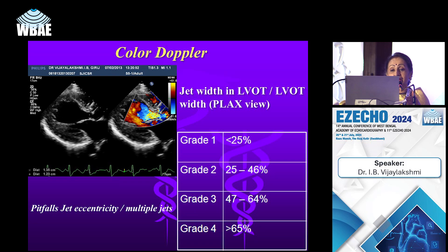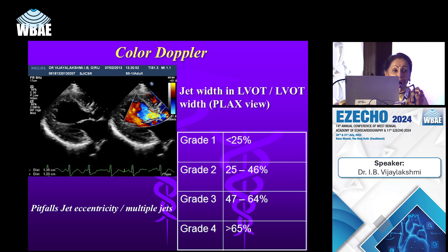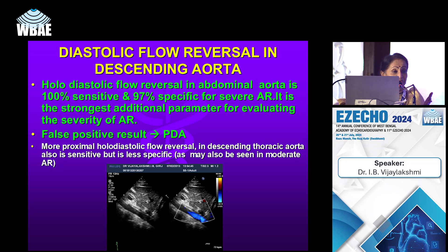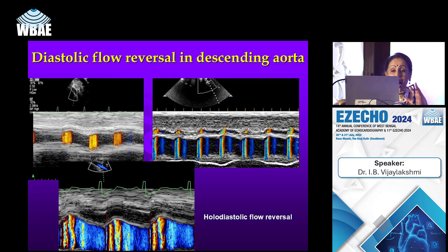When AR coexists with MS, the apical impulse becomes hyperdynamic instead of the typical tapping impulse, and pulse pressure is widened. In mitral stenosis alone, LV dimensions are small due to underfilling. However, when AR is associated, LV dimensions are increased, reflecting the AR volume load on the left ventricle.